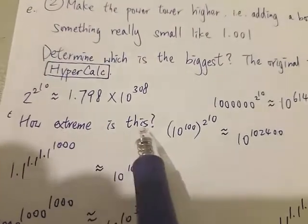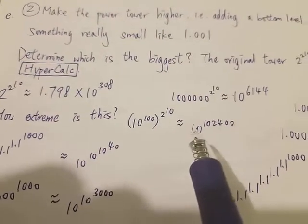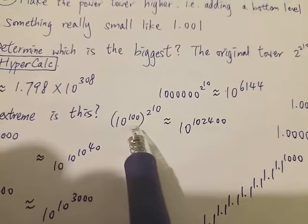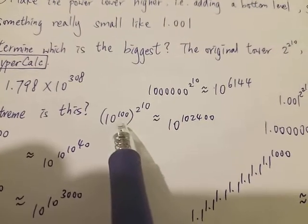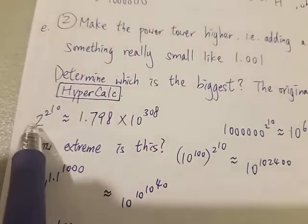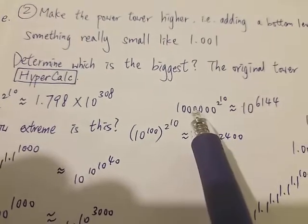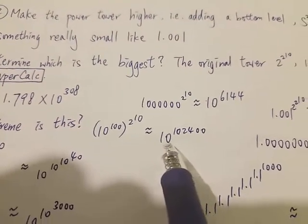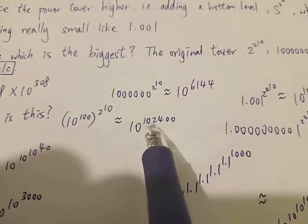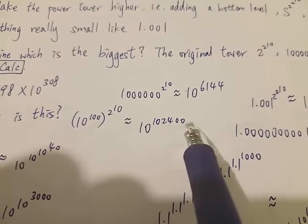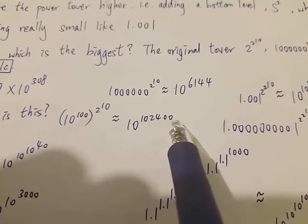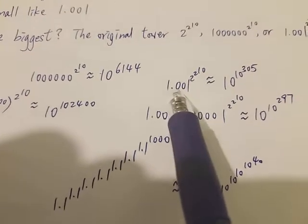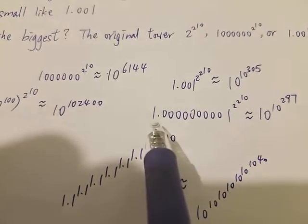How extreme is this? Let's look at a way more extreme case. Instead of using a million, let's use a googol — 10 to the 100 — as the base. That means we change the base 2 to a googol. We're going to get a much bigger number — around 10 to the power of 102,400, which is a six-figure number. And for the tiny base version, instead of 1.001, we use 1.0000000000001 — that's 10 zeros — which is even much closer to 1.